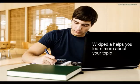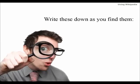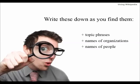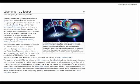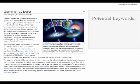When you know more about your topic, you can use that information when you search in other places, like the Internet and the library. As you read through a Wikipedia entry, write down topic phrases, names of organizations, names of people, relevant dates, and related items or issues. The reason for this is to generate a list of keywords and phrases you can use when searching for sources on your topic. For example, here's the entry for gamma-ray burst, and here's a list of keywords and related terms for the entry.